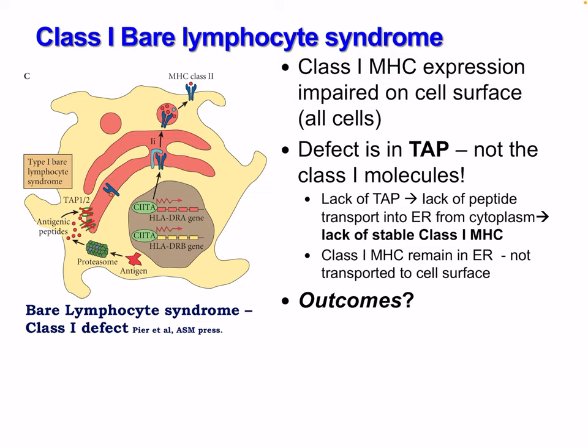Class 1 bare lymphocyte syndrome: in this disease, class 1 MHC expression is impaired on the cell surface in all cells. This is because there's a defect in the TAP transporter protein, not the class 1 molecules themselves. This lack of TAP results in a lack of peptide transport into the ER from the cytoplasm, which results in a lack of stable class 1 MHC. Class 1 MHC remains in the ER and is not transported to the cell surface.